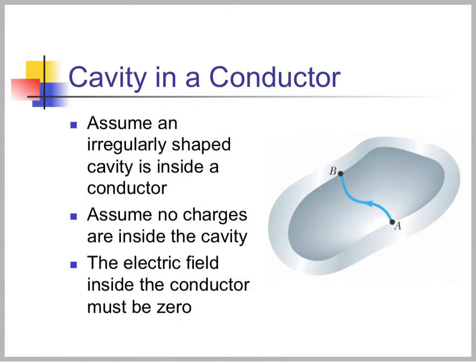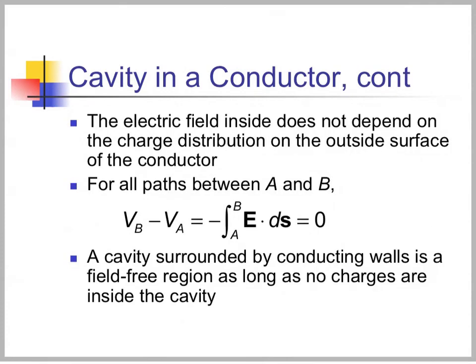If there is a cavity inside the conductor, the potential is constant on and inside the conductor. As long as there are no charges floating around in the cavity, the electric field inside must be zero. The electric field inside does not depend on the charge distribution on the outside. For all paths between A and B, delta V equals the integral of E dot ds, which equals zero. A cavity surrounded by a conducting wall is a field-free region as long as there are no charges inside.